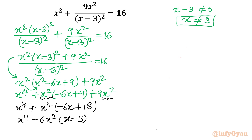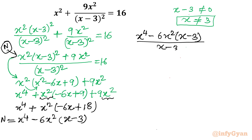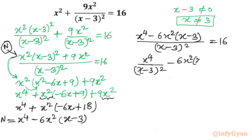This is our numerator. Putting this back, I write: x power 4 minus 6x squared times (x minus 3), divided by (x minus 3) whole square, equal to 16. Now I split the numerator: x power 4 over (x minus 3) whole square.